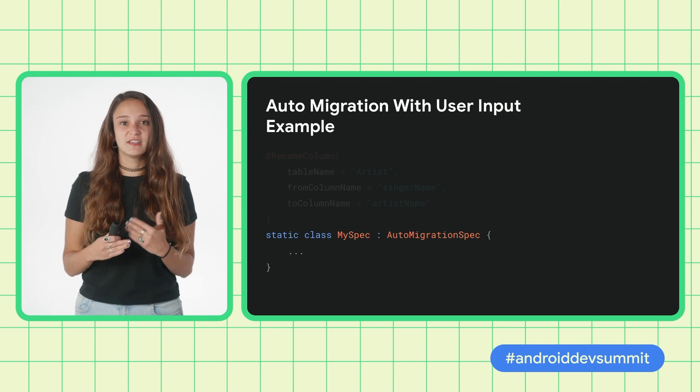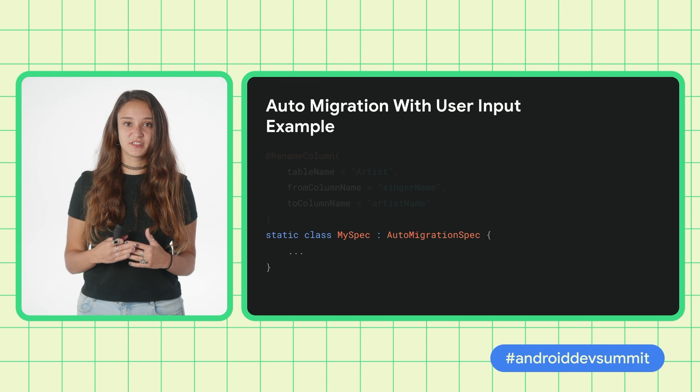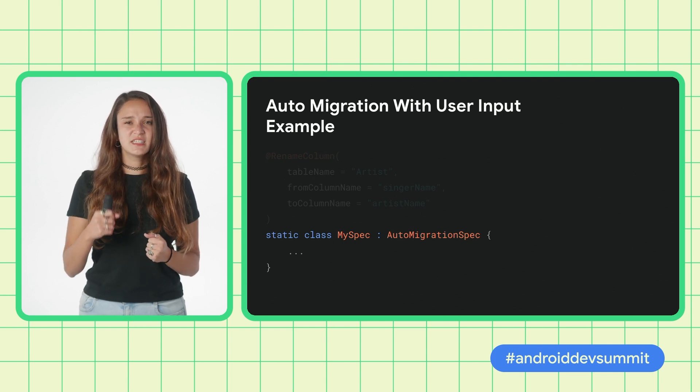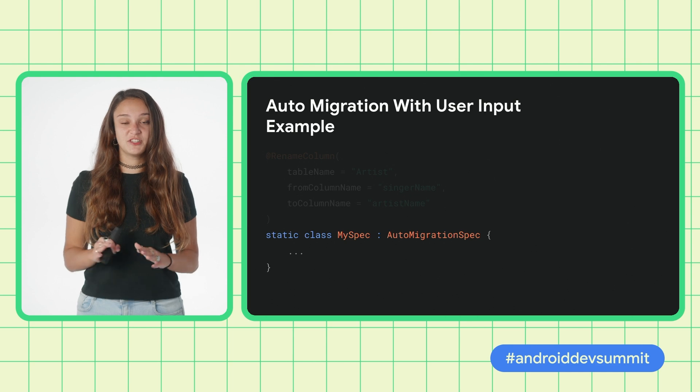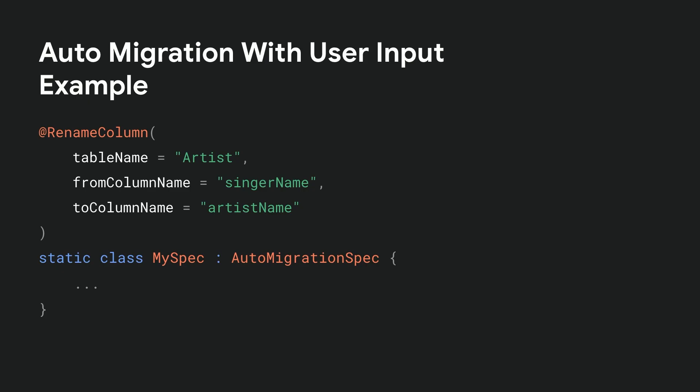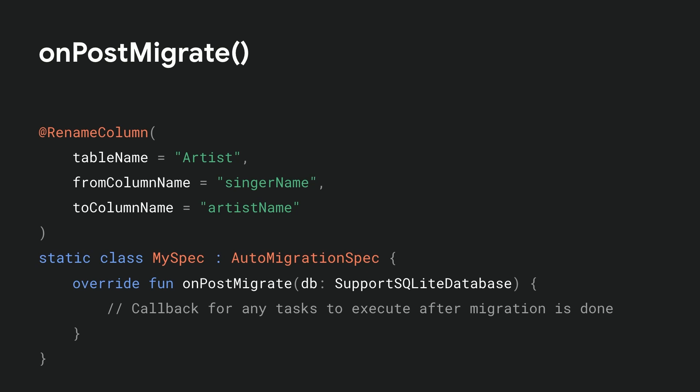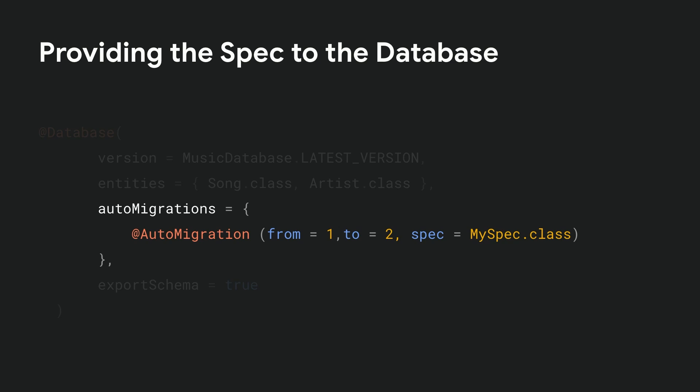The auto migration spec is an interface for defining auto migration specifications, clarifying these ambiguous scenarios. This is done by annotating the spec with the relevant change annotations. In this case, we have a RenamedColumn annotation, where we provide the table name, the original name of the column, and the updated name. Like this, the code is cleaner and easier to read and understand. As a bonus, if you have any additional tasks to execute after the migration has been completed, you can use the onPostMigrate function of the auto migration spec to run them. When you've finished implementing your auto migration spec, you will need to provide it to the database definition and define an auto migration.